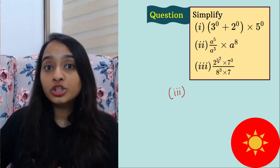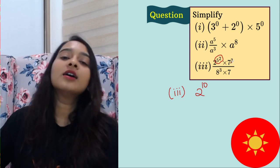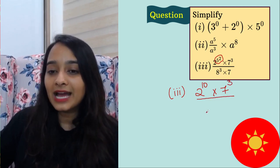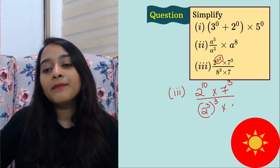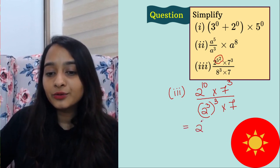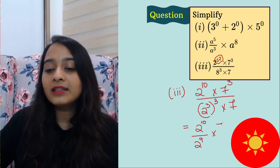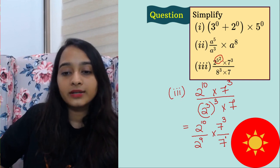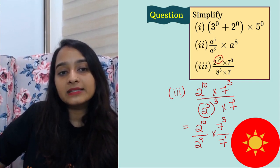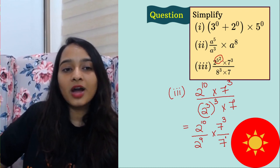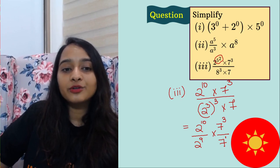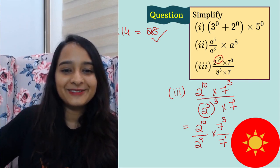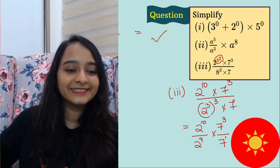Third: (2⁵)² = 2^10. Then 8 can be written as 2³, so 8³ = (2³)³ = 2⁹. The expression becomes 2^10 ÷ 2⁹ × 7³ ÷ 7¹. Using the quotient law: 2^(10−9) × 7^(3−1) = 2¹ × 7² = 2 × 49 = 98. So the final answer is 98.